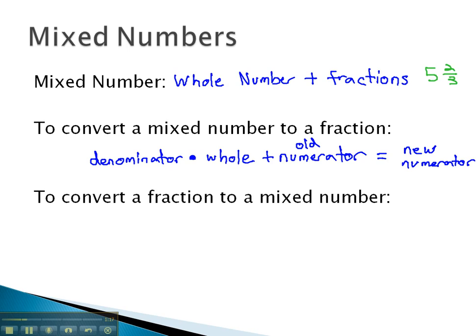So for example, with this five and two-thirds up here, we would multiply the three times the five to get fifteen, and add two to get seventeen, and that would be seventeen for the new numerator over three.